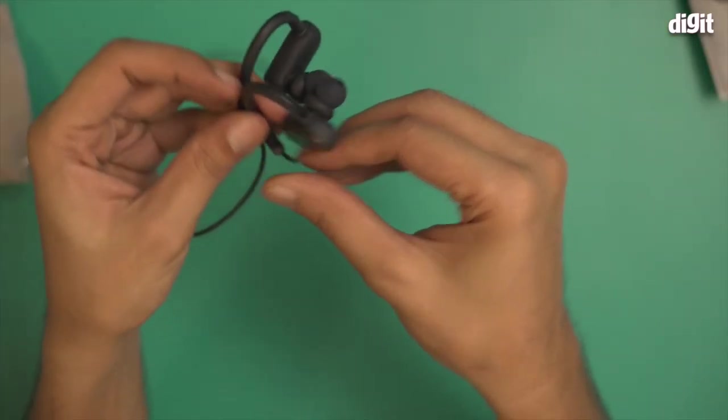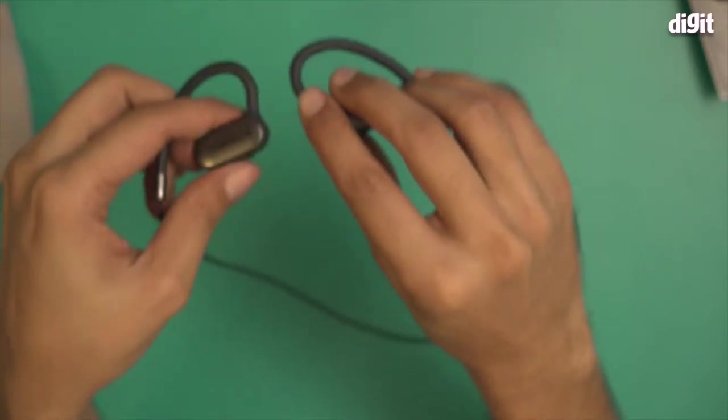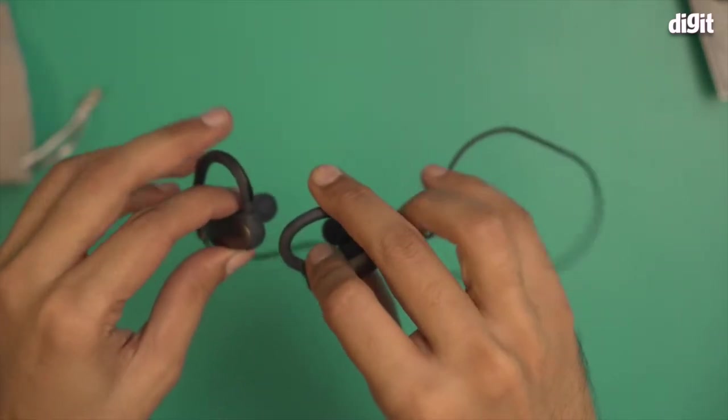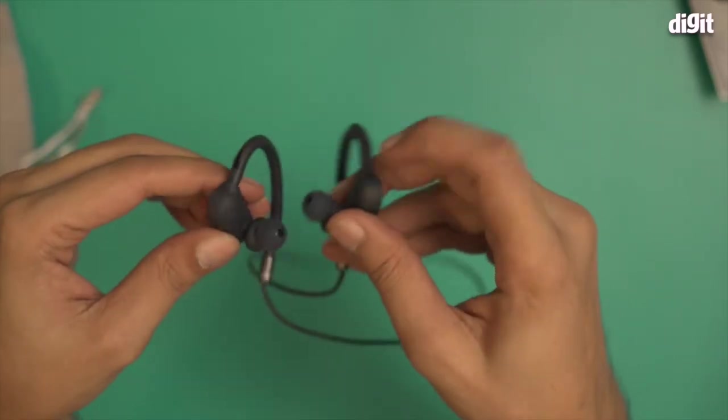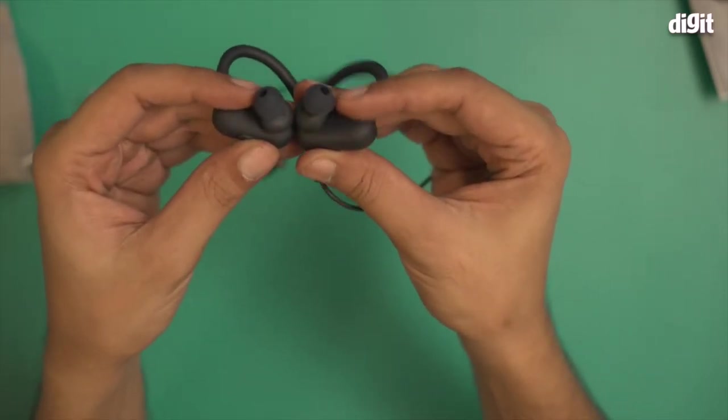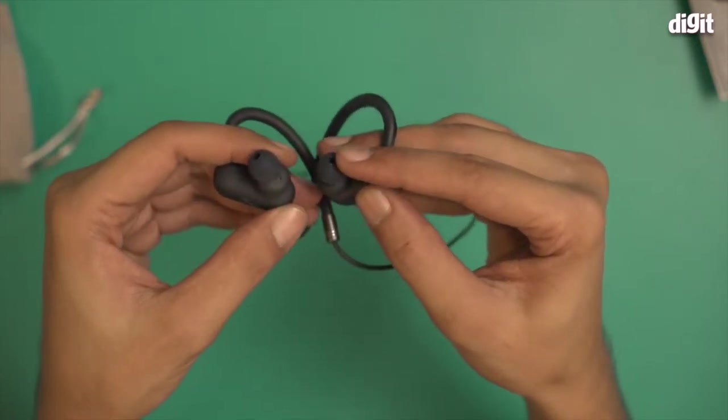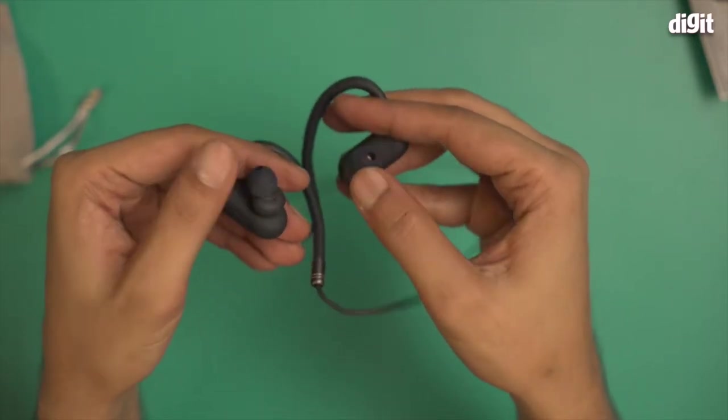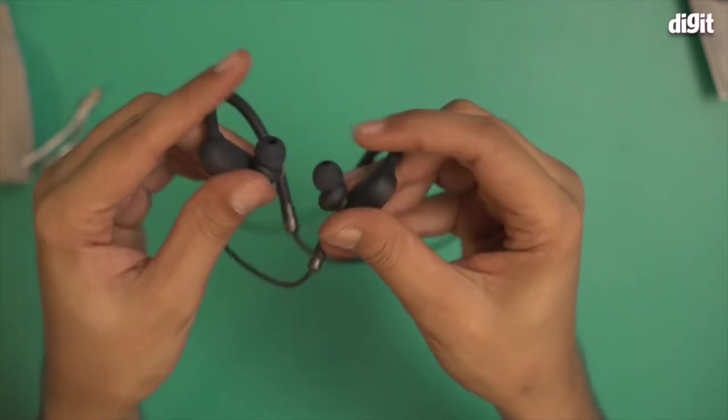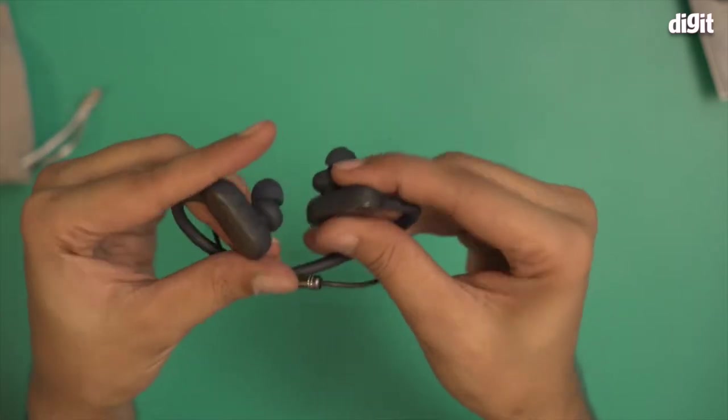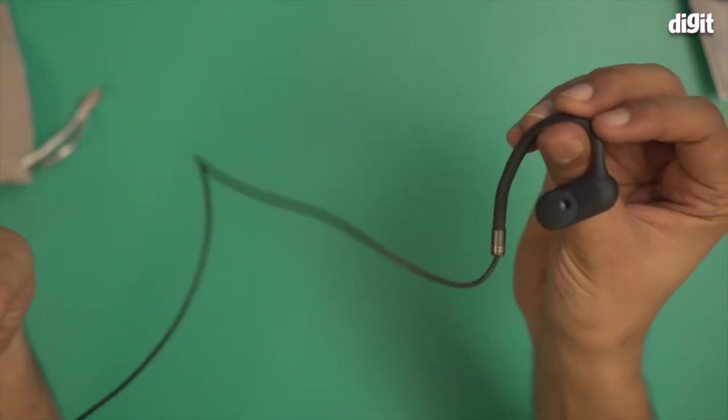It also comes with these ear hooks. Basically these ear hooks are what will guarantee a secure fit around your ear when you wear them. You will notice that it comes with a uniquely angular nozzle right over here. These are the medium sized ear tips that I mentioned earlier.